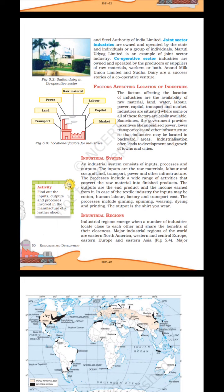Locational factors for industries include transport, land, power, raw material, labour, capital and market. The factors affecting the location of industries are the availability of raw material, land, water, labour, power, capital, transport and market. Industries are situated where some or all of these factors are easily available. Sometimes the government provides incentives like subsidised power, lower transport cost and other infrastructure so that industries may be located in backward areas.